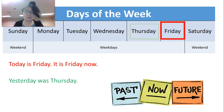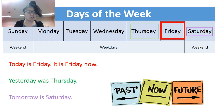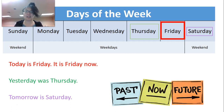Yesterday was Thursday — in the past, yesterday was Thursday. Tomorrow is Saturday. Tomorrow will be Saturday. Good.